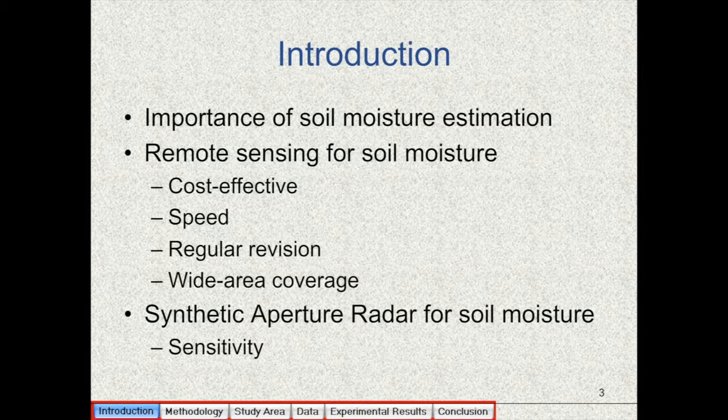So soil moisture is defined as the ratio of the amount of water in soil to the total amount of soil. It's an important parameter in many fields but its measurement is difficult. It has been traditionally measured using time-consuming fieldwork, so remote sensing with its unique data gathering specifications seems promising for this purpose because it is cost effective, it is fast, we can have regular revisions in case you are interested in changes in soil moisture, and the images in remote sensing cover wide areas.